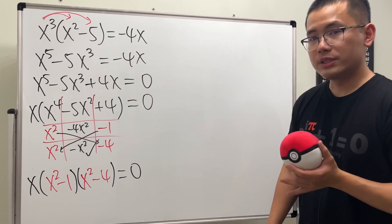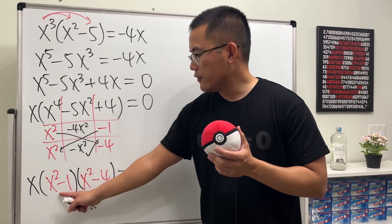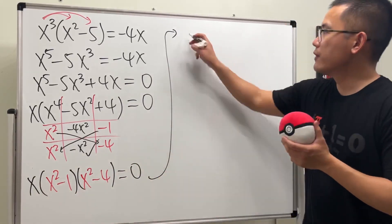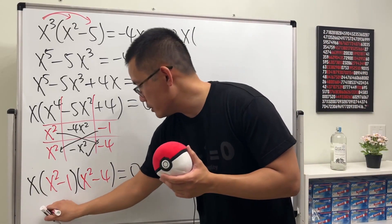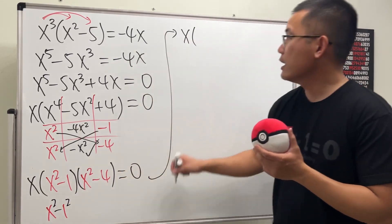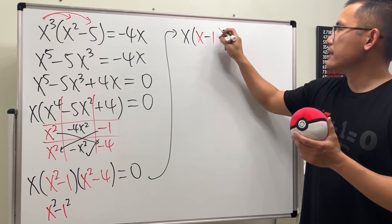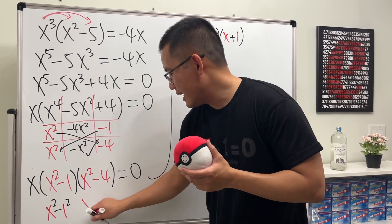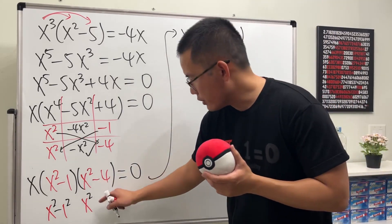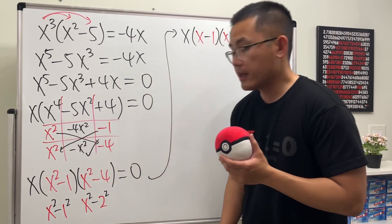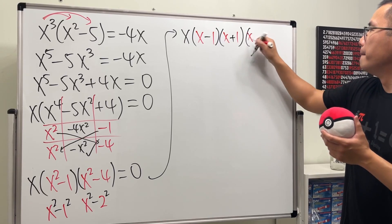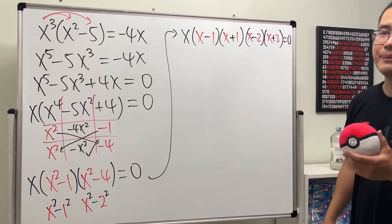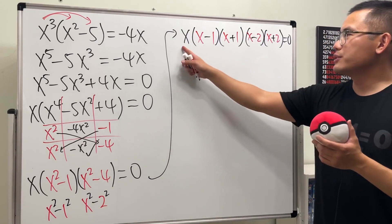We can keep factoring! This is the difference of two squares, and likewise this is also a difference of two squares. Bringing it all down: we still have x in the front. x squared minus 1 is x squared minus 1 squared, so it factors as (x minus 1)(x plus 1). And x squared minus 4 is x squared minus 2 squared, so it factors as (x minus 2)(x plus 2). So the full factored form is x times (x minus 1)(x plus 1)(x minus 2)(x plus 2) equals zero.